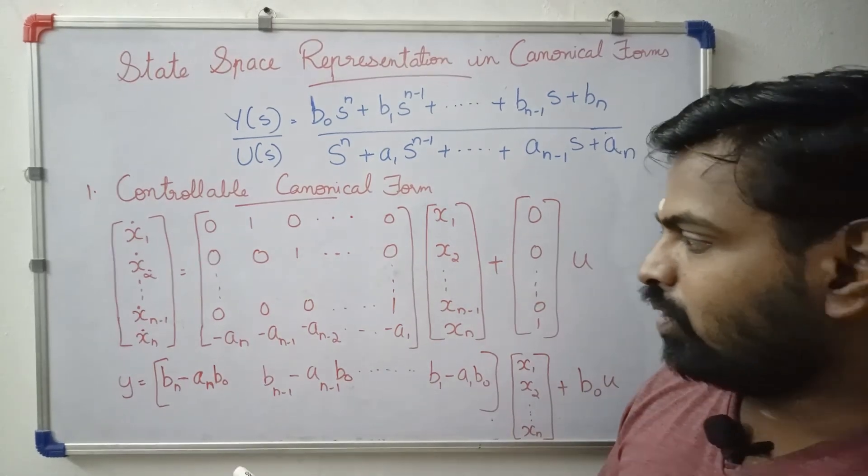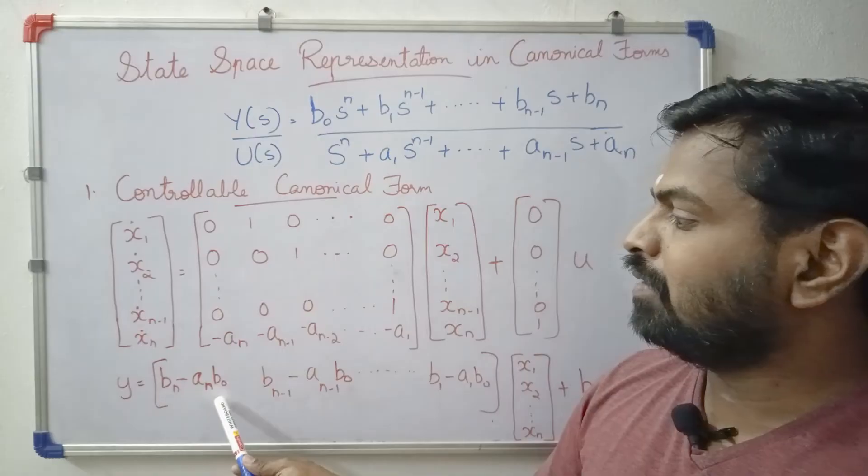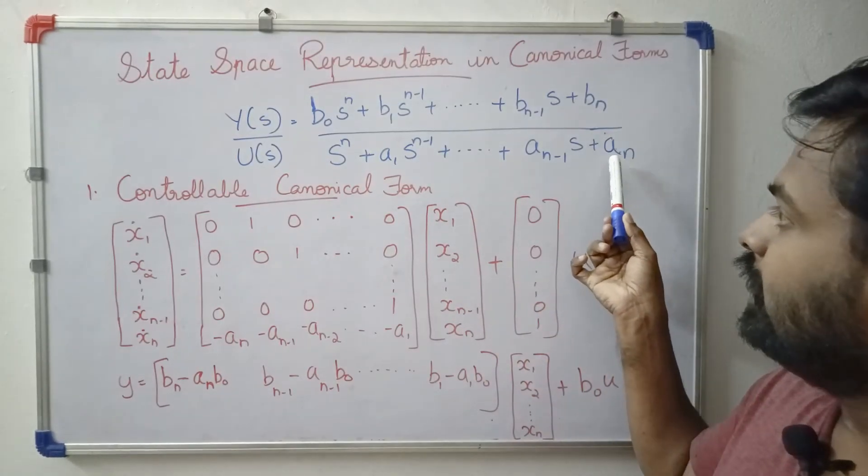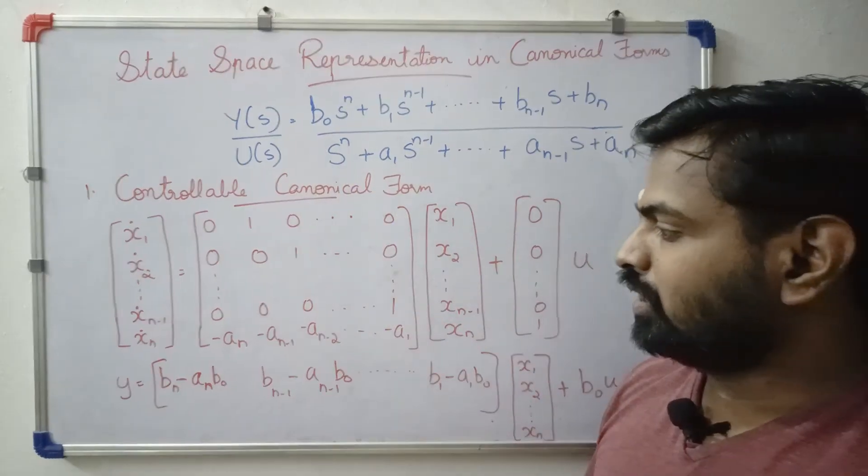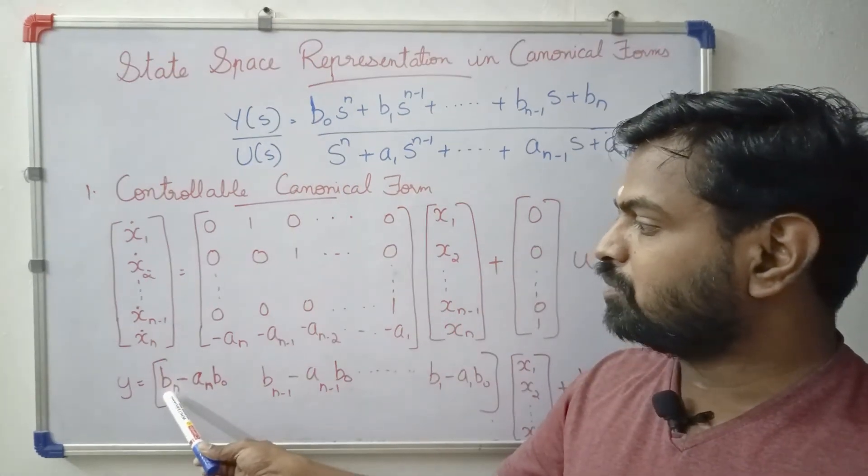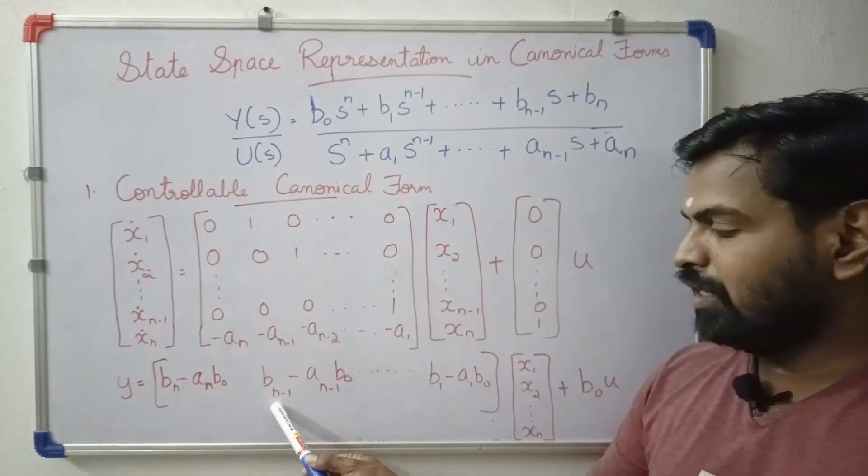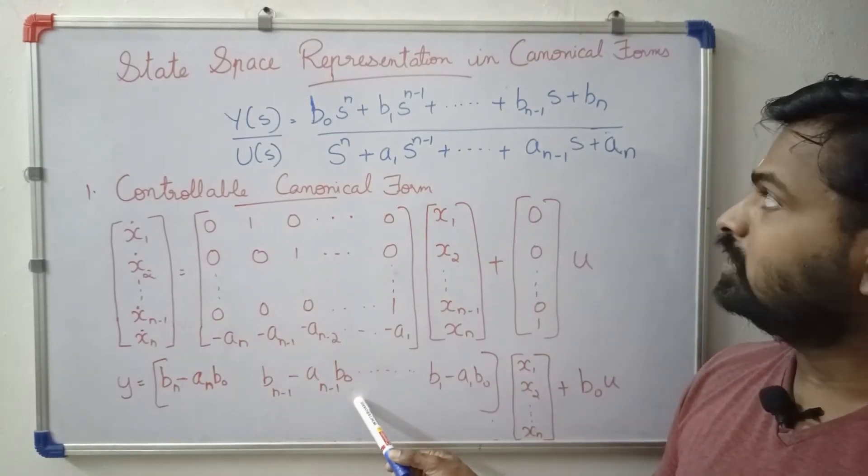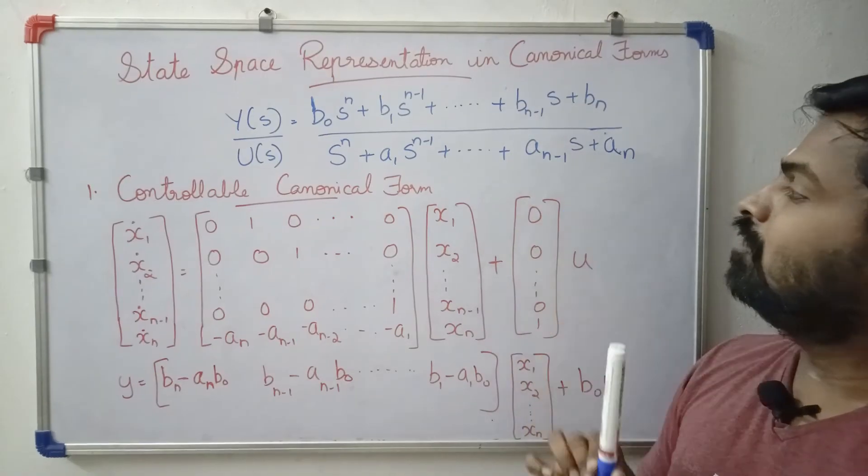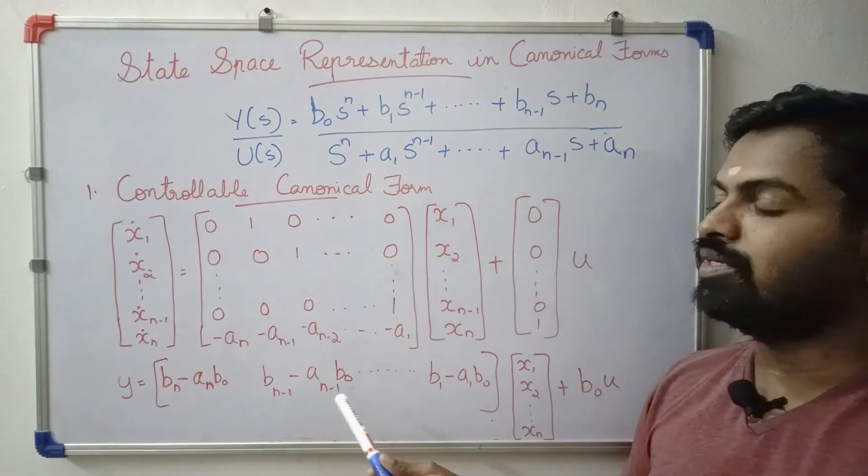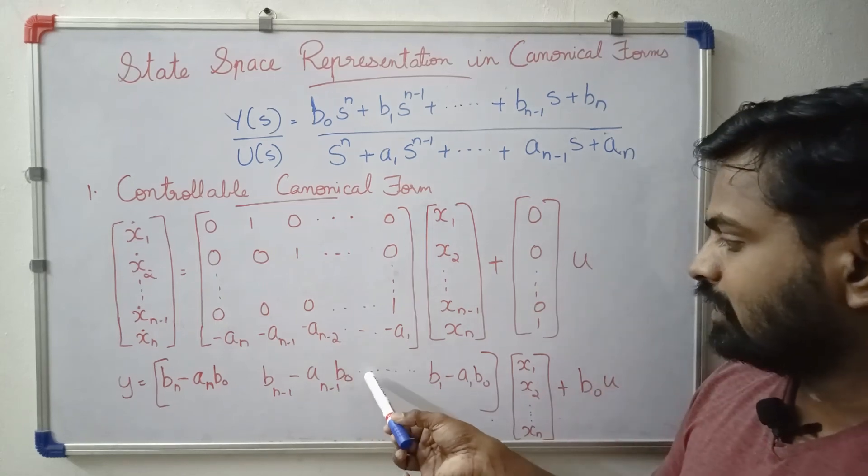Now bn, this is bn, this is an, this is b0. In this equation, we substitute the coefficients: bn minus an times b0, b(n-1) minus a(n-1) times b0. Here we have two coefficients. What is the last term?